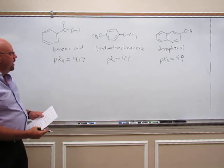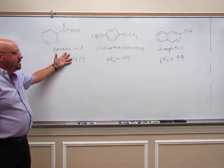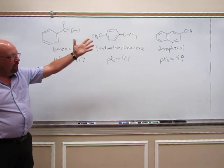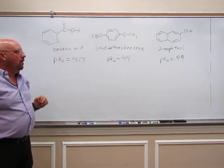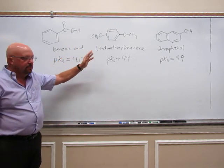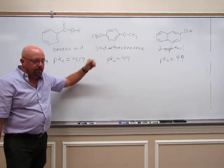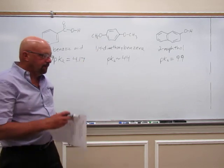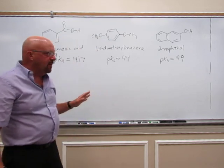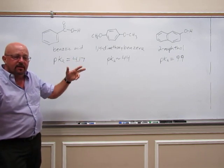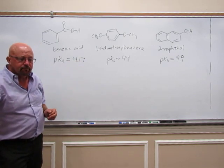So of the three, benzoic acid is by far the most acidic, then 2-naphthol, and finally 1,4-dimethoxybenzene is not acidic at all. We're going to separate these based on their different acidities using an extraction technique.